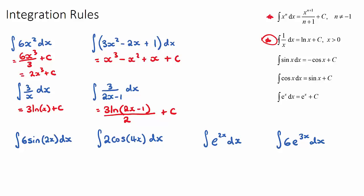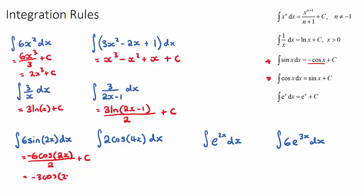Now let's look at sine and cosine. If we're integrating 6 sin(2x), sine integrates to negative cosine — the opposite to differentiation. The 6 stays at the front, sine goes to negative cos, giving negative 6 cos(2x). The bracket stays the same, and the derivative of what was inside the bracket, which is 2, goes on the denominator, giving negative 6 cos(2x) over 2, which simplifies to negative 3 cos(2x) plus c.